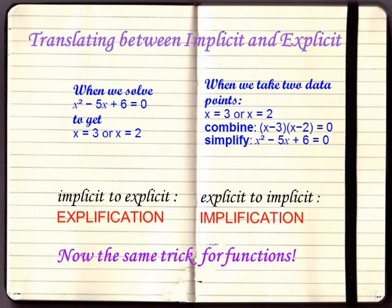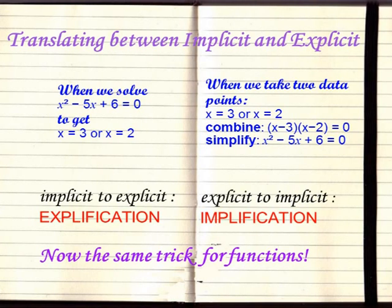How do we translate between implicit and explicit? When we solve an equation like x square minus 5x plus 6 equal to 0, we get the two answers x equal to 2 or x equal to 3. This is the process of going from implicit to explicit which we can call explification. In the reverse direction when we take two data points x equal to 3 or x equal to 2 and combine them and then simplify them, this process is going from an explicit rule to an implicit rule. This process we can call implification.